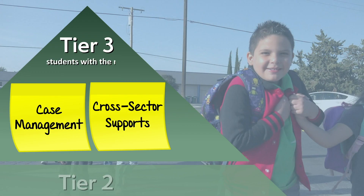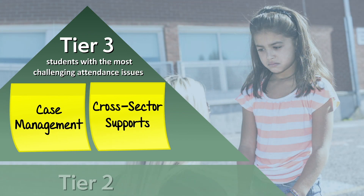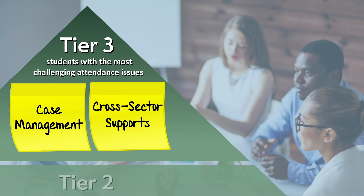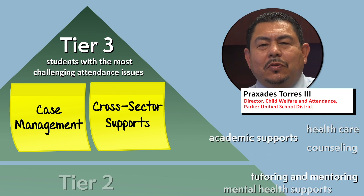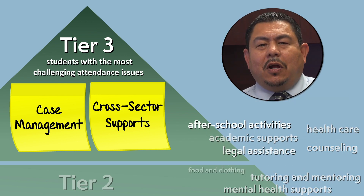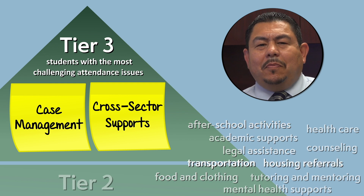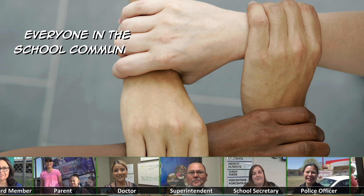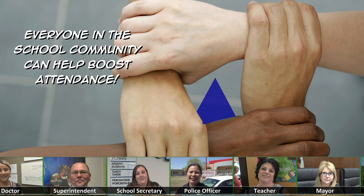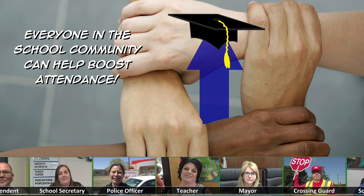Tier 3 strategies are for students with the most challenging attendance issues. On a case-by-case basis, these districts work with community partners to provide individualized, intensive interventions to get students back on track both academically and personally. Every student, every classroom, every day — that is our goal. The district, the schools, the school-based health centers, our police officers, our parents, the entire community works together. Everyone in the school community can help boost attendance, and in Kerman, Parlier, and Tulare, this means more students are attending school.